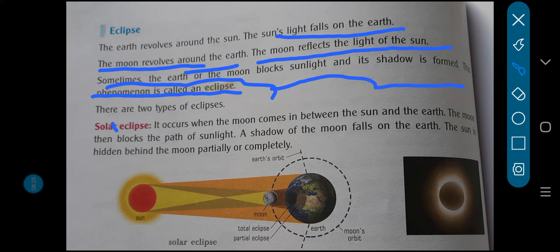There are two types of eclipses: solar eclipse and lunar eclipse — which in Hindi we call surya grahan and chandra grahan. Solar eclipse always occurs in the daytime, because the sun rises during the day. And lunar eclipse always occurs at night.